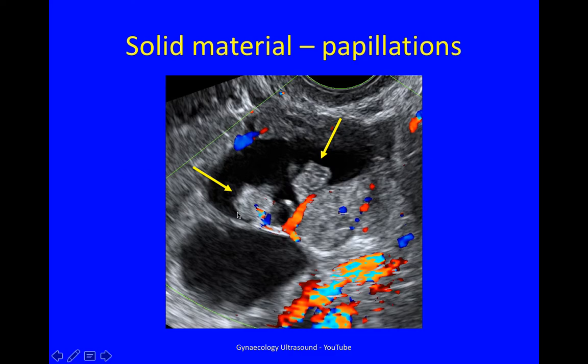Here are two papillations. These two bits of solid area clearly indent the cyst wall, which is now irregular.